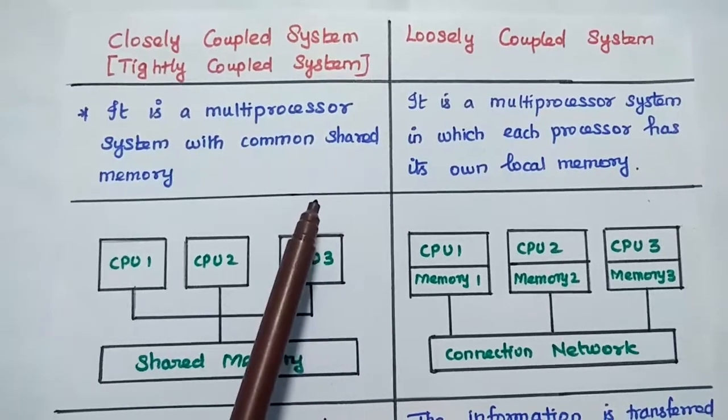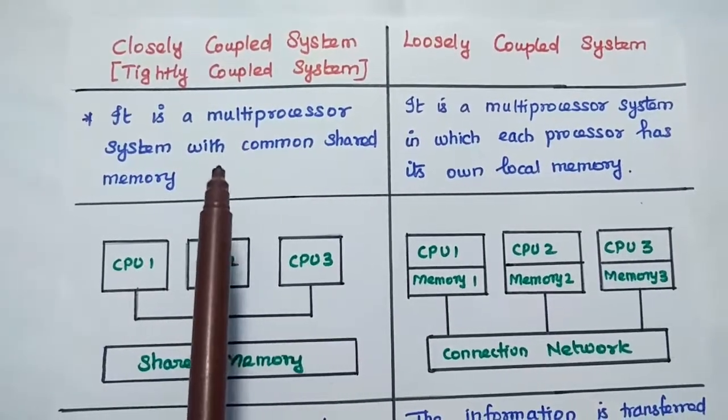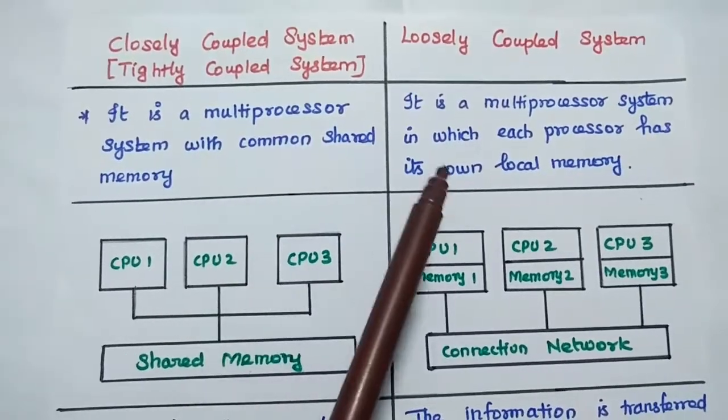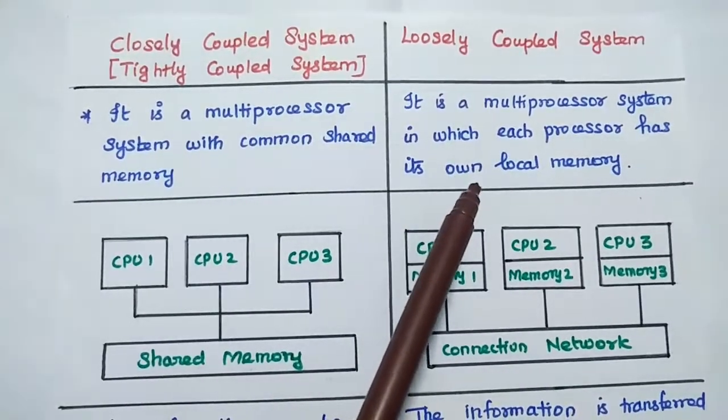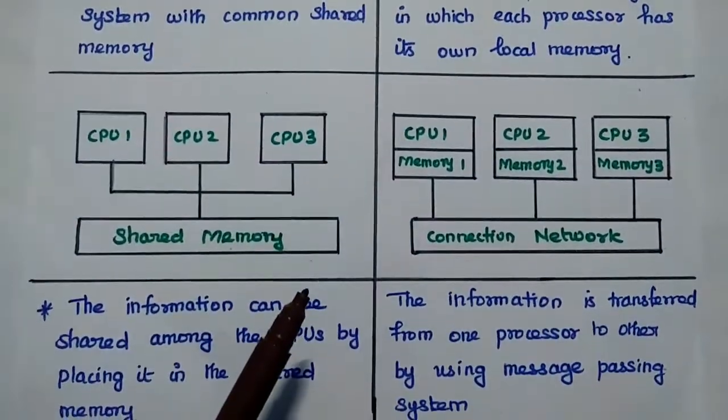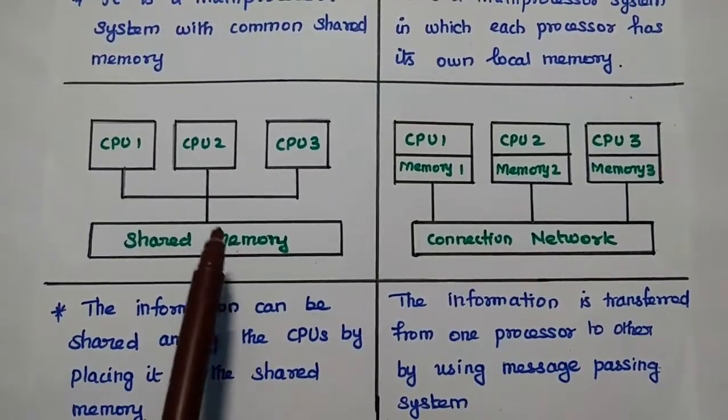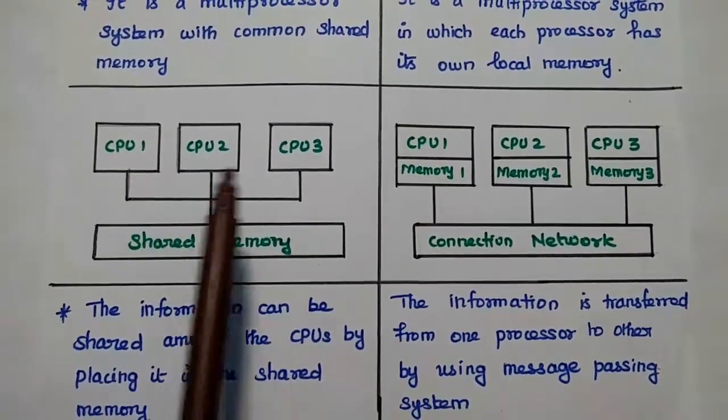Do you all understand the difference between these two? So here a common memory is shared among all the processors. But here each memory is having its own local memory. So that can be represented in this diagram. So here we are using a shared memory module which can be shared by these CPUs.